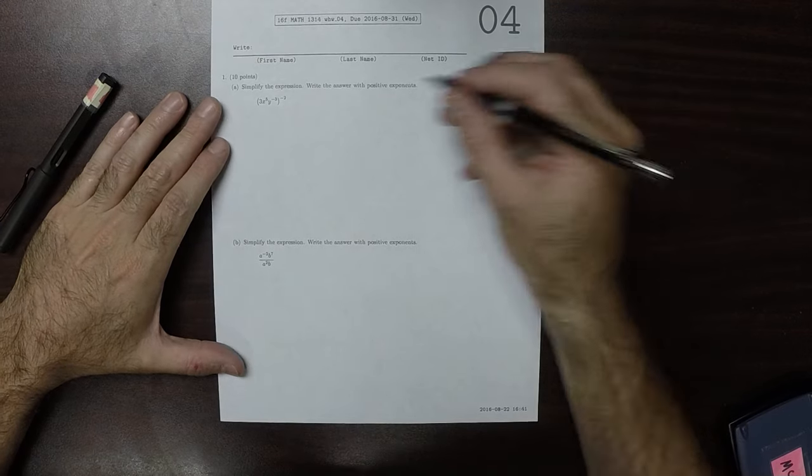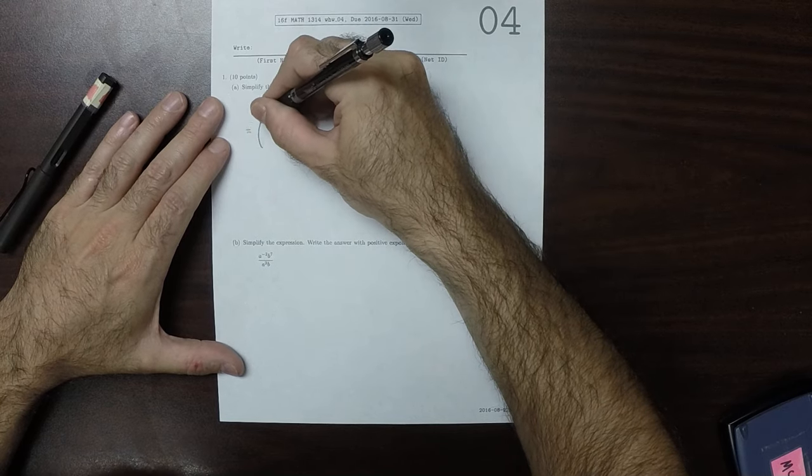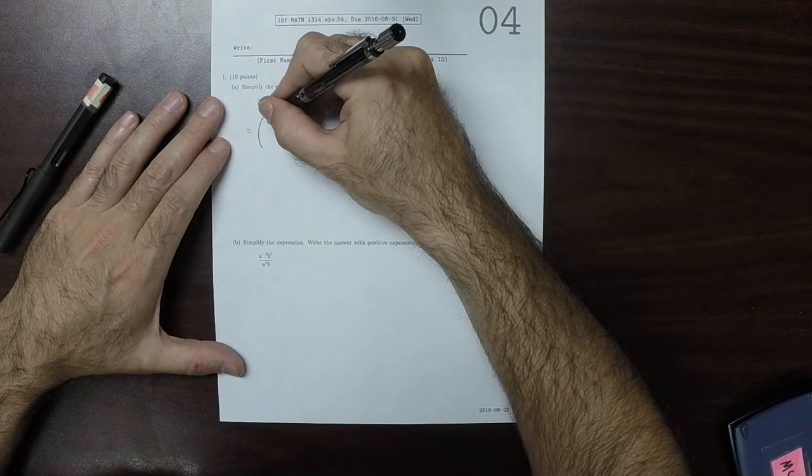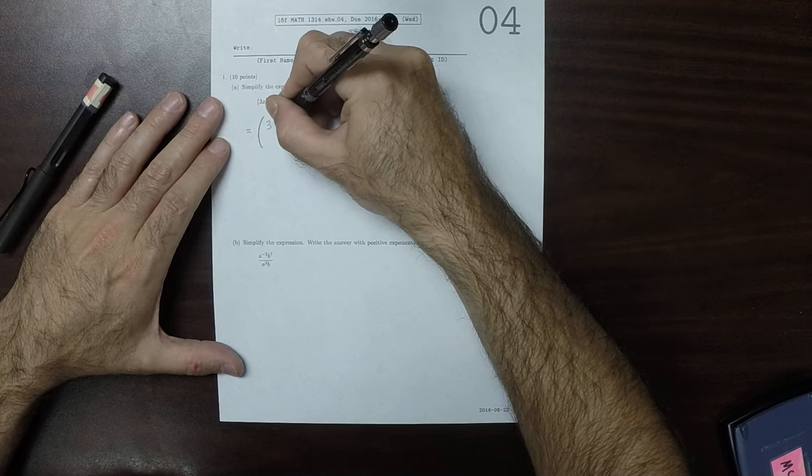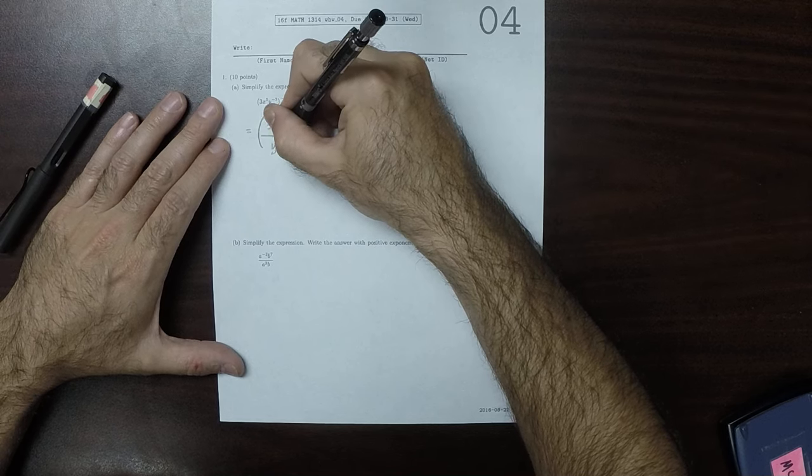So, in the first place, working inside of the parentheses, we could write this as 3x to 5 over y to 3.